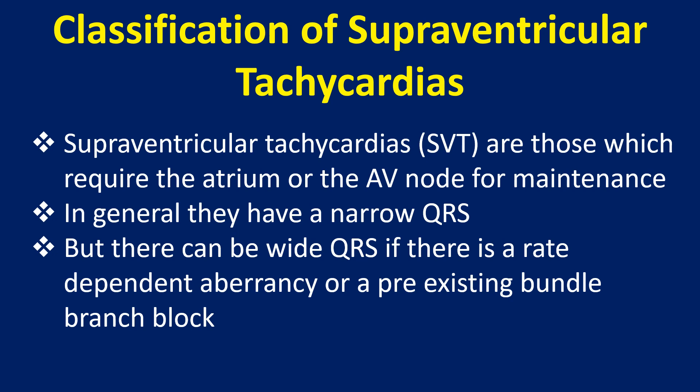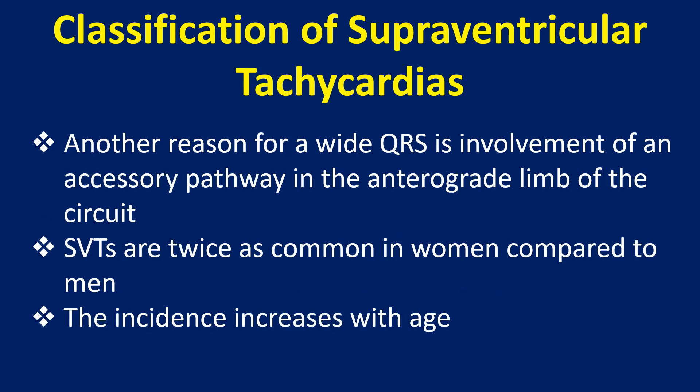In general, they have a narrow QRS. But there can be wide QRS if there is rate-dependent aberrancy or a pre-existing bundle branch block. Another reason for a wide QRS is involvement of an accessory pathway in the anterograde limb of the circuit.